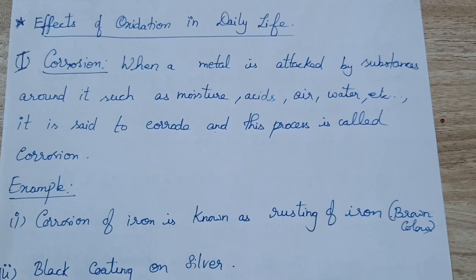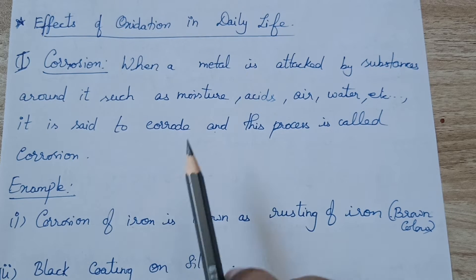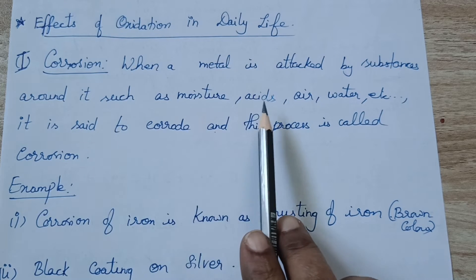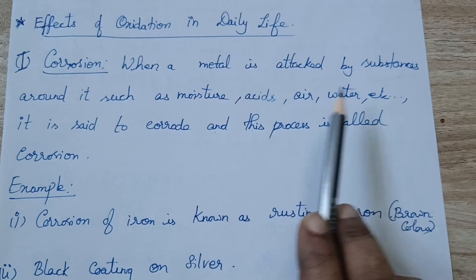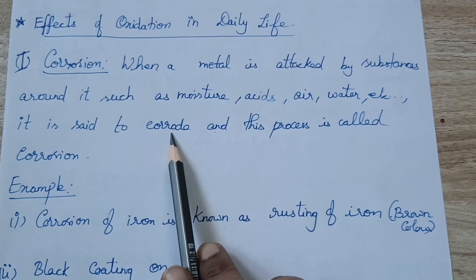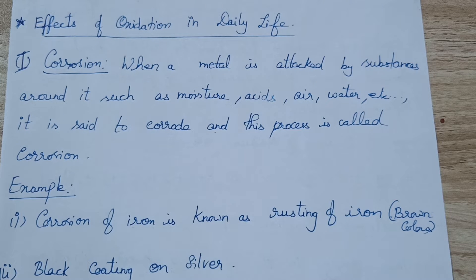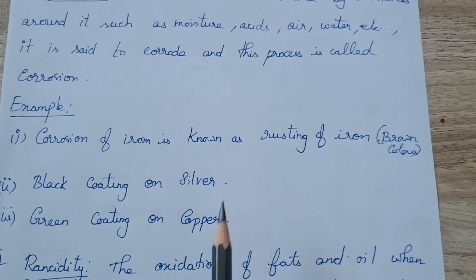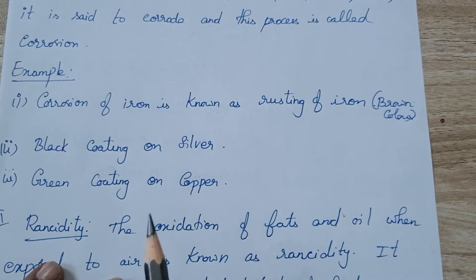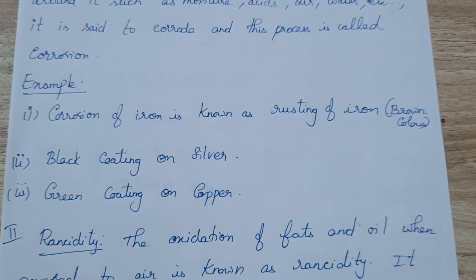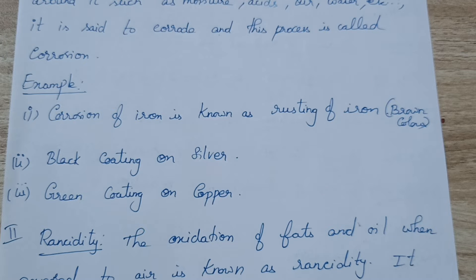This process is called corrosion. When a metal is attacked by a substance around it such as moisture, acids, air, water, etc., it is said to corrode. Usually we use the word corrosion in the case of iron, because most of the time we can see iron getting deteriorated. The corrosion of iron is particularly known as rusting of iron.